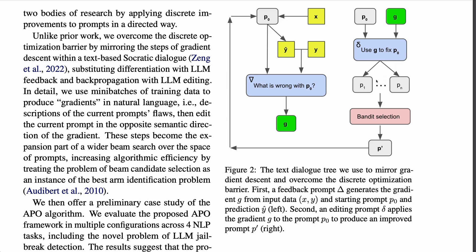Another important feature is that they are doing something similar to beam search — they're not only exploring one direction for improving the prompt, one gradient, but multiple in parallel. To do this, they use a bandit selection method, which allows them to explore multiple hypotheses about what could be wrong with the prompt and then pick the best ones to focus on further, allowing better exploration of this space of possibilities.